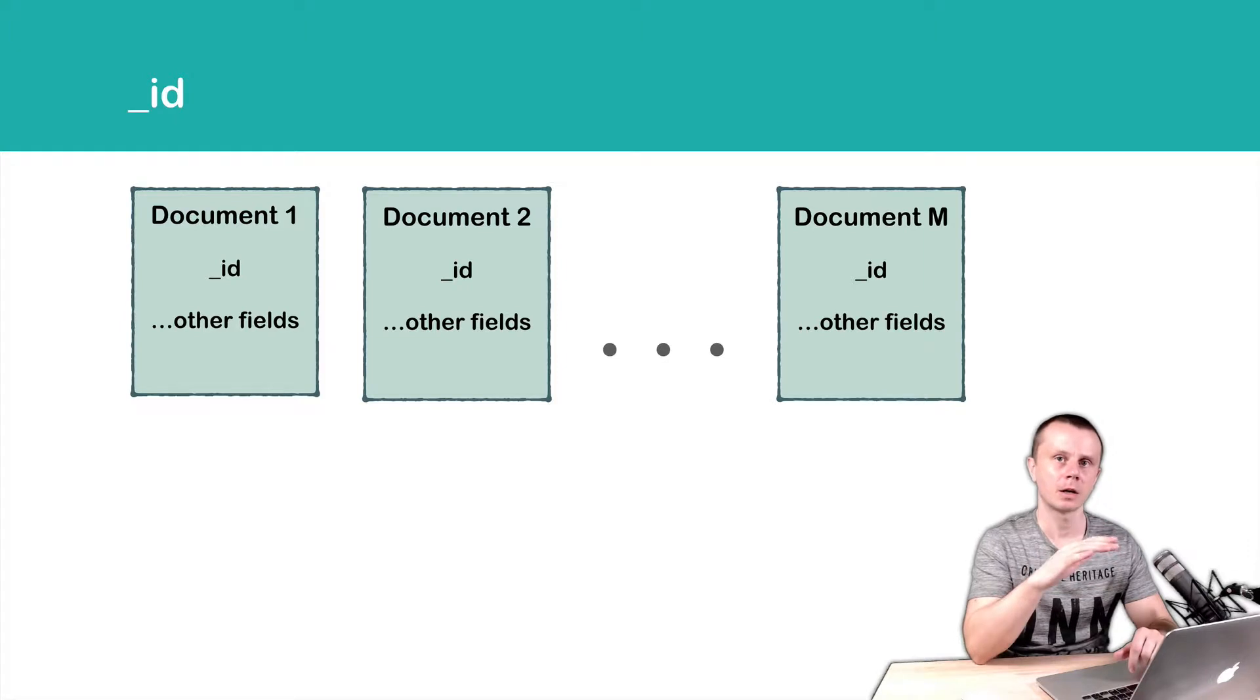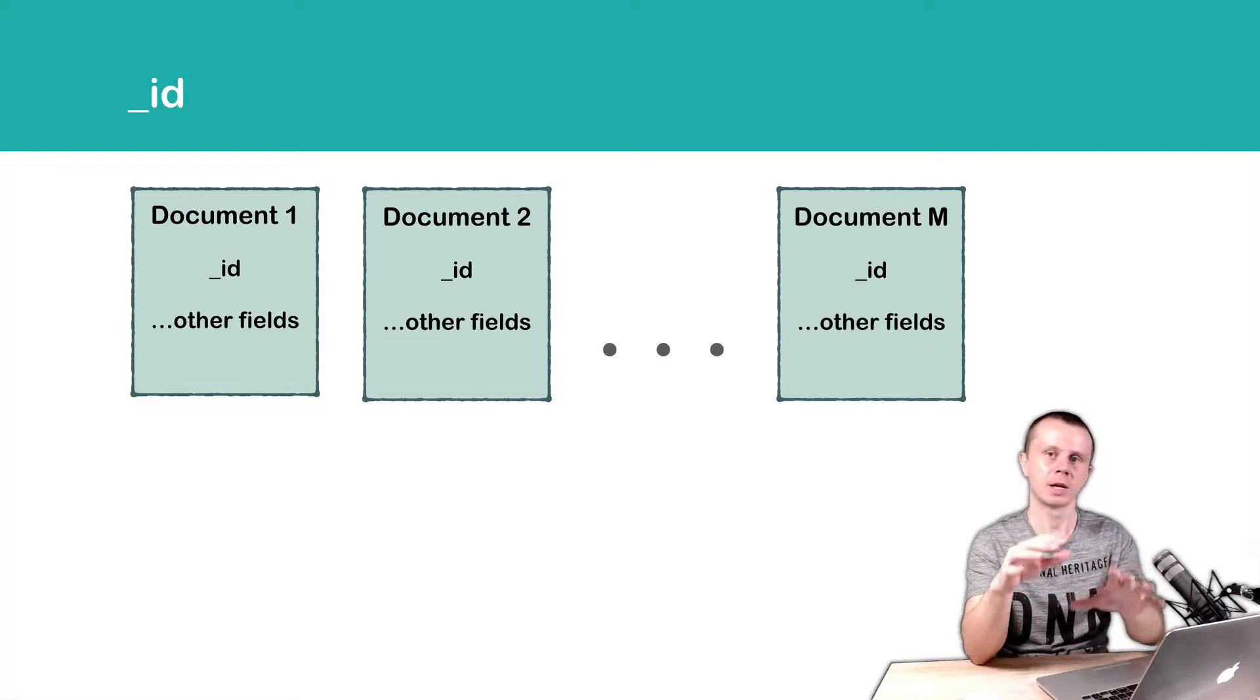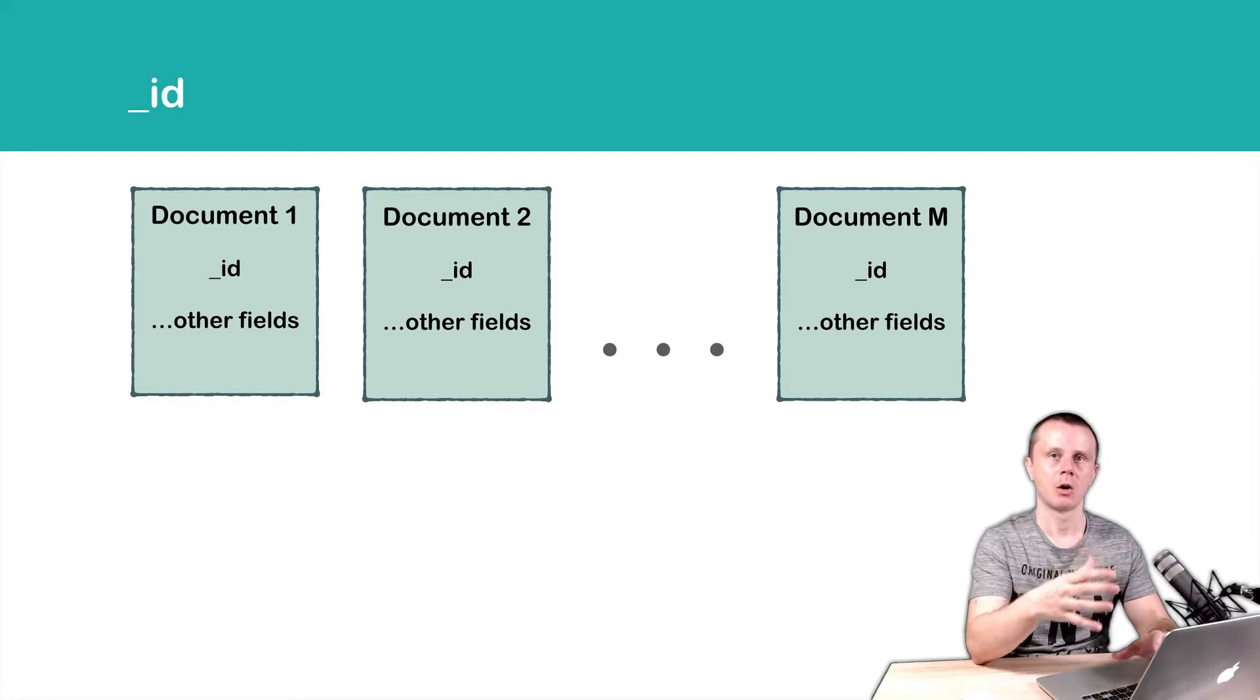This identifier is used for retrieval of a certain document from the MongoDB database, and this ID must be unique across the MongoDB database.